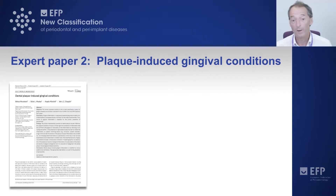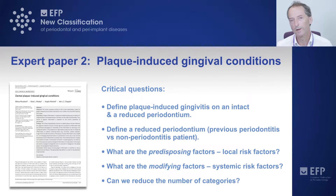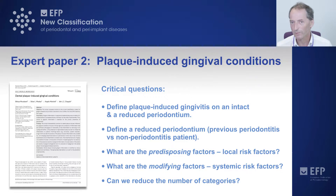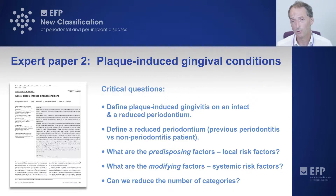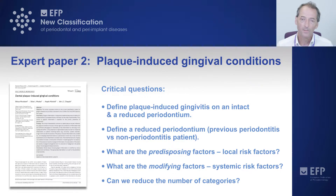The second expert paper looked at plaque-induced gingival conditions. The critical challenges were: could we define plaque-induced gingivitis on both an intact and a reduced periodontium? How did we define the reduced periodontium? Importantly, what were the predisposing or local risk factors for the development of plaque-induced gingivitis? What were the systemic risk factors or modifying factors that might alter the course or rate at which that inflammation developed? And most importantly, could we reduce the number of categories of gingivitis in the 2017 system?